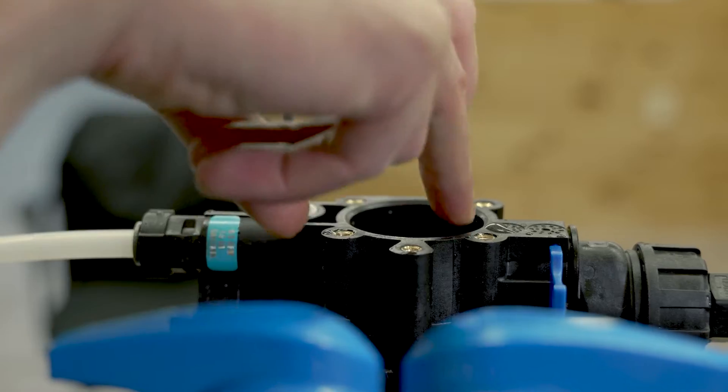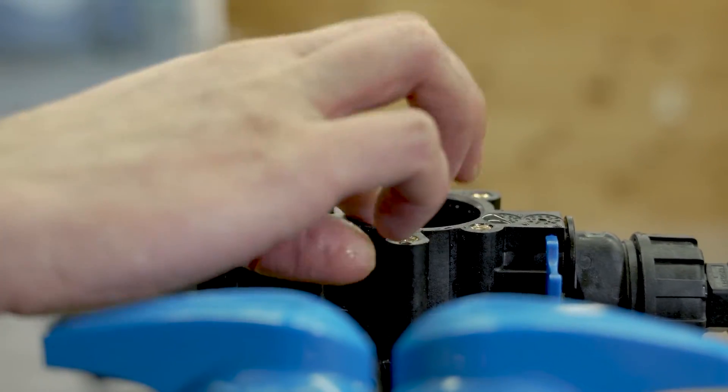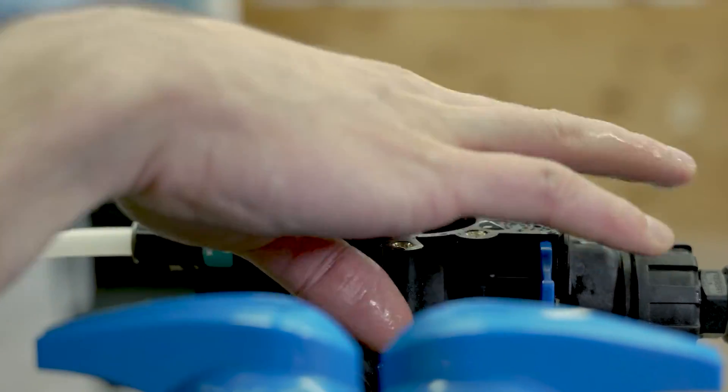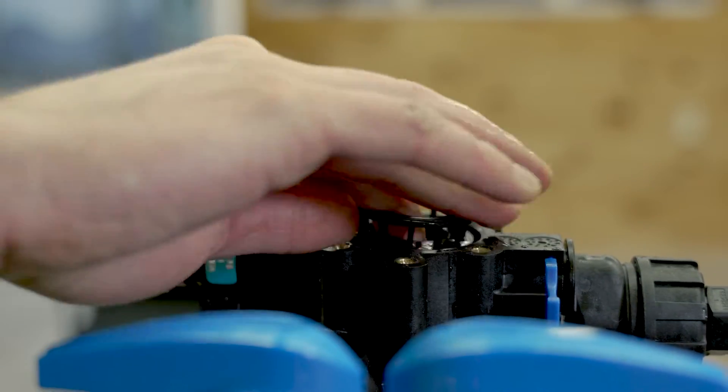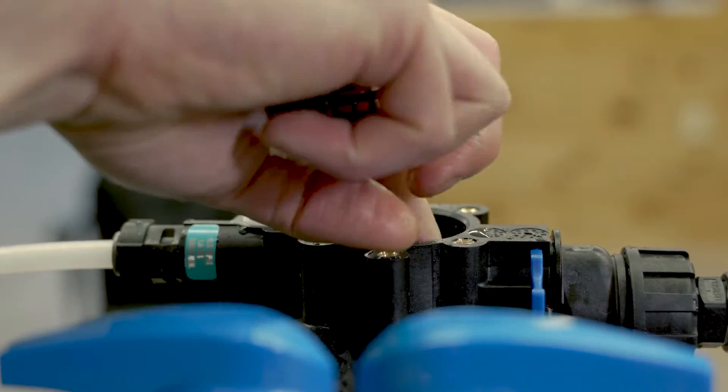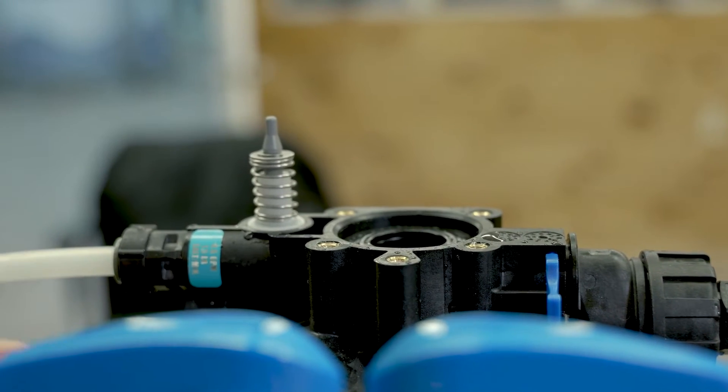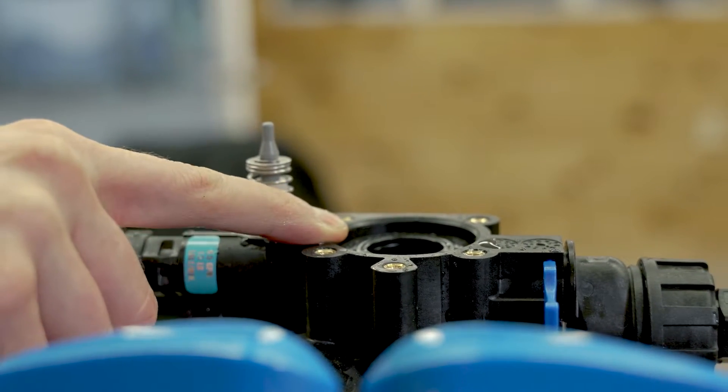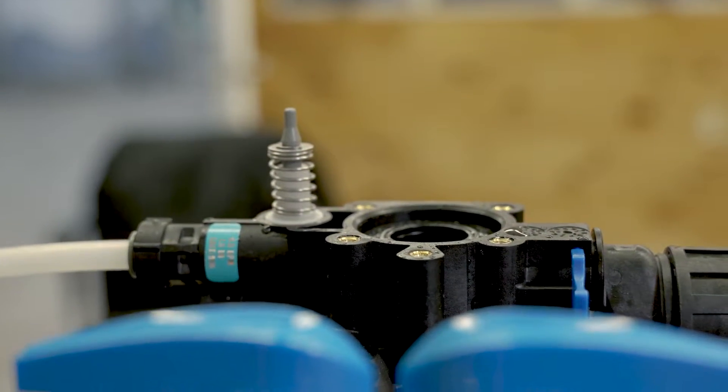The top of each seal should be flush with the ports inside the valve body. When you're all done, you'll notice about between an eighth and quarter inch of space at the top of the valve body.